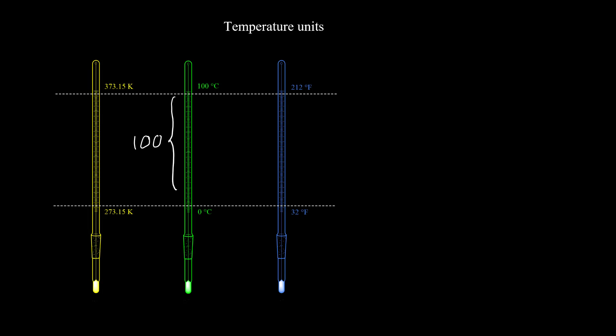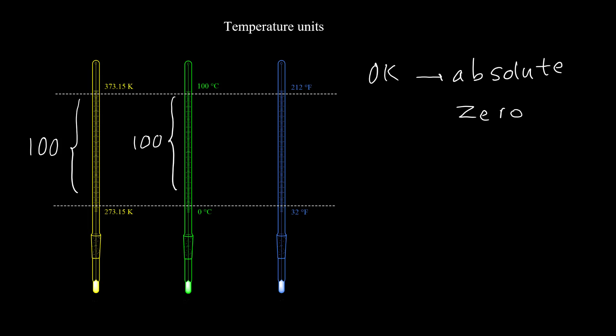Celsius is not the SI unit for temperature — the SI unit is Kelvin, shown in yellow. The freezing point of water in Kelvin is 273.15 and the boiling point is 373.15, so there is also a 100-degree range between them. The size of one degree in Celsius and Kelvin is identical. Zero Kelvin is absolute zero — the coldest temperature in the universe, with nothing lower.